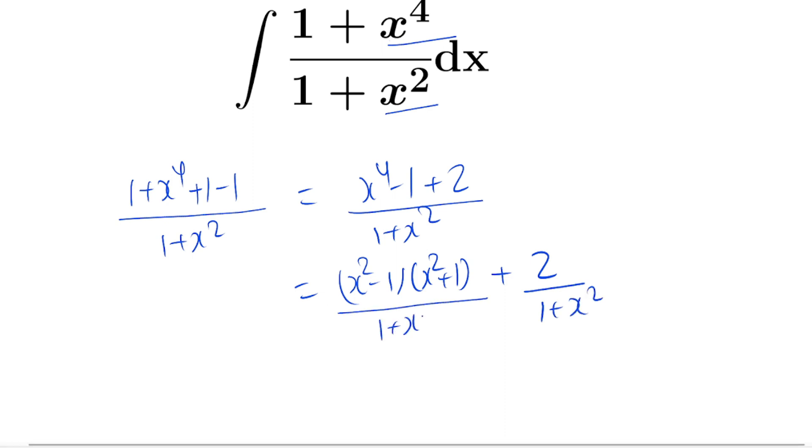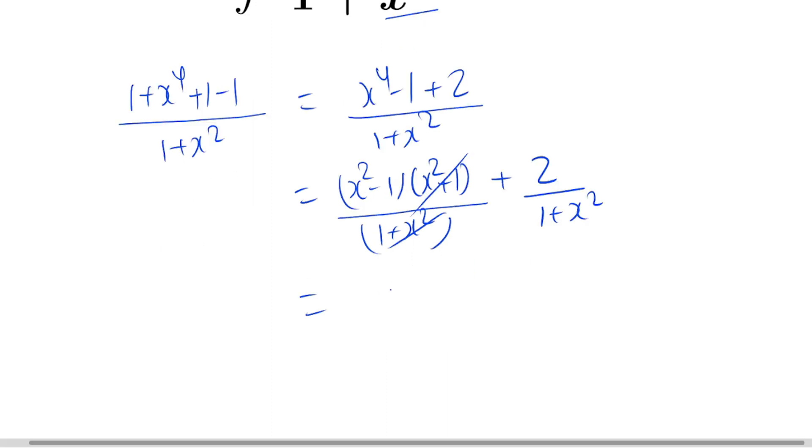Here we have 1 plus x square, so now we can cancel 1 plus x square and we are left with x square minus 1 plus 2 over 1 plus x square.